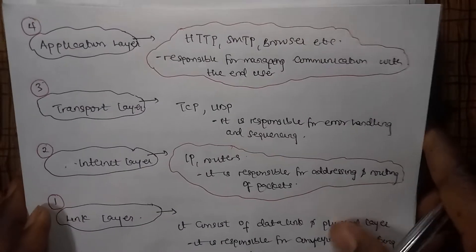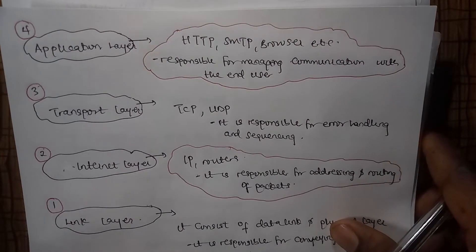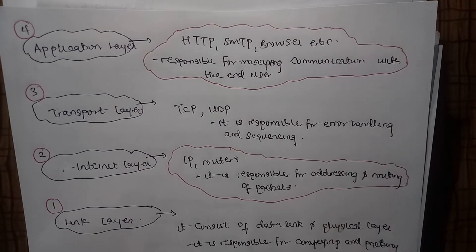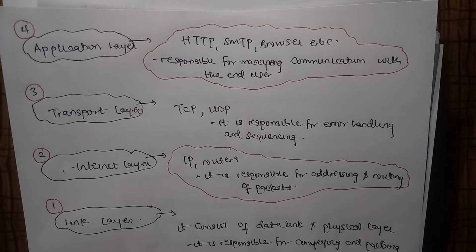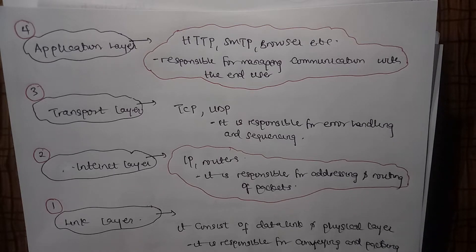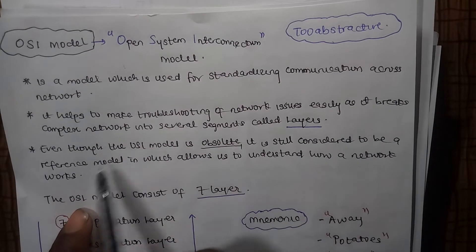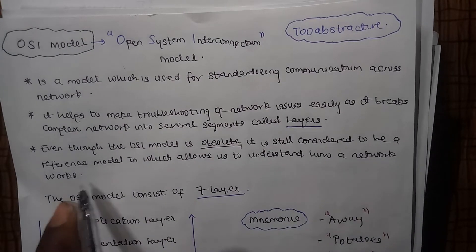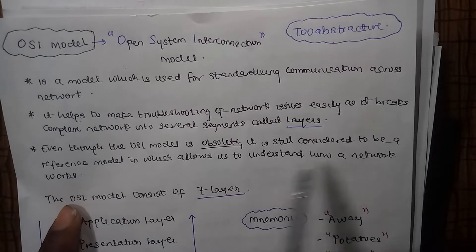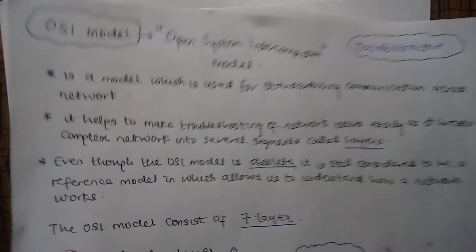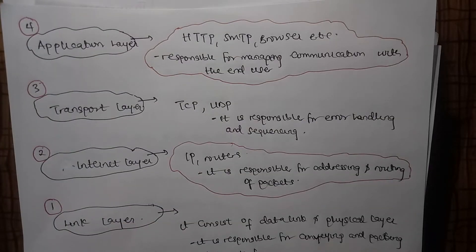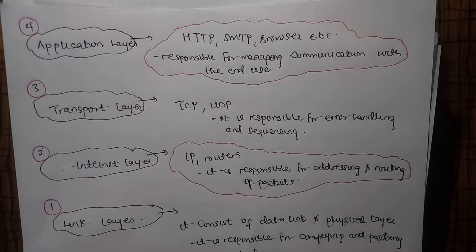If you understand the OSI model, there is the foundation. Like we said in the previous video, it is still considered to be a reference model which allows us to understand how networks work. It's the layer that comprises everything. But in making things much simpler, we use TCP/IP which just consists of four layers.